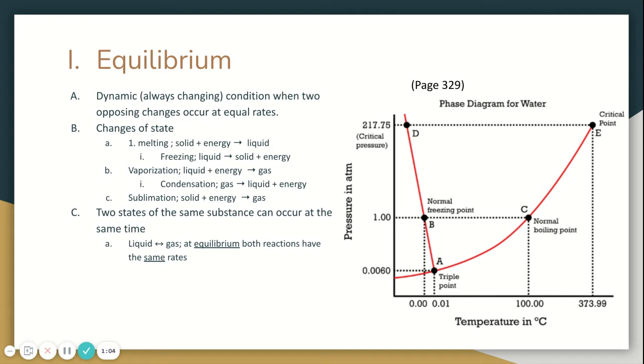For example, water freezes at zero degrees Celsius. It also melts at zero degrees Celsius. It's the same change happening in opposite directions. Solid to liquid or liquid to solid, it's happening at the same temperature.